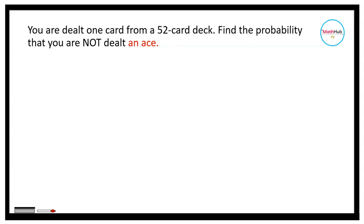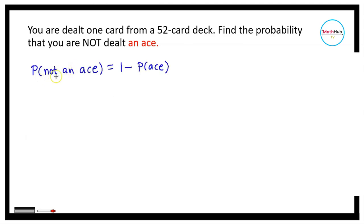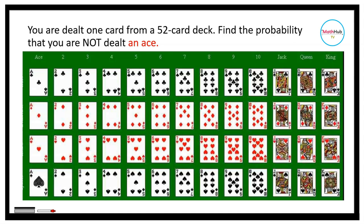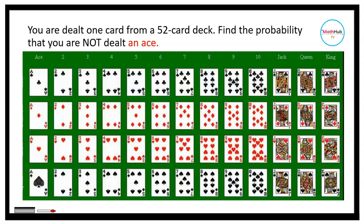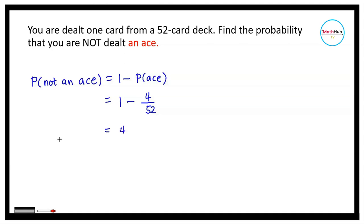The probability that you are not dealt an ace can be computed by finding the probability that you are dealt an ace and subtracting that from one. So P(not ace) = 1 minus P(ace) = 1 minus 4/52, because there are four aces in a 52-card deck. Simplifying gives us 48/52, which equals 12/13.